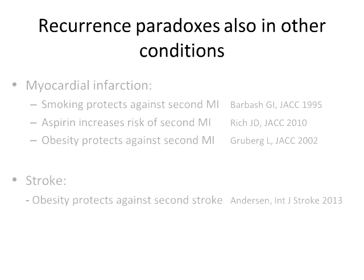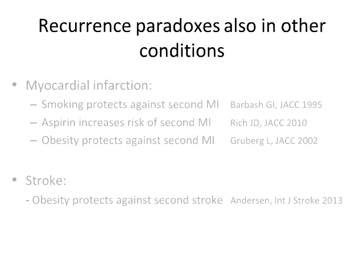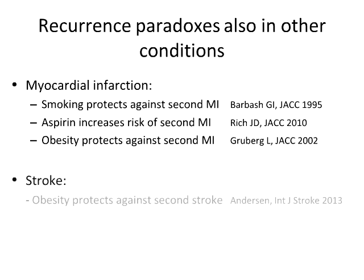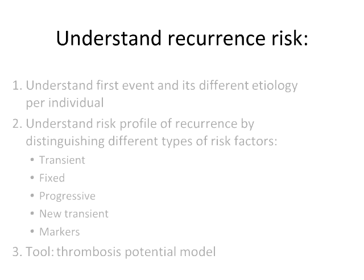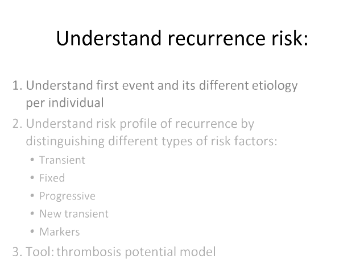You may be confused, but it could be a comfort to know that these funny recurrence paradoxes also appear for other conditions — it has to do with studying recurrence rather than first events. For myocardial infarction, people find that smoking protects against a second MI, that aspirin increases the risk of a second MI, and that obesity protects against a second MI. The same has been found for stroke — this is called the obesity paradox. To understand all this, I'd like to go through the etiology of a first event and discuss the different types of risk factors.